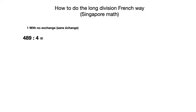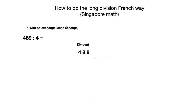Let's do it with 489 divided by 4. First you draw two lines like this — it's called la potence. You're going to put 489 on the left; this is the dividend. On the right you just write 4; this is the divisor.